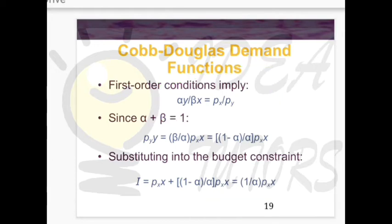If you have the Cobb-Douglas utility function, you will always get this relationship: alpha times y divided by beta times x equals px divided by py. This is something you need to remember specifically in relation to the Cobb-Douglas function.